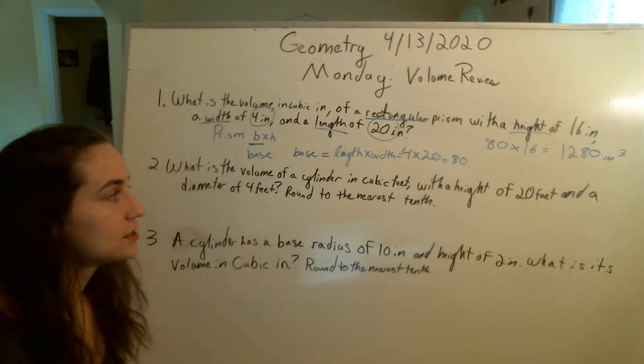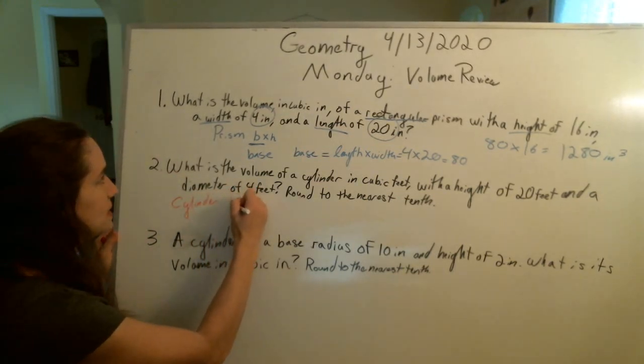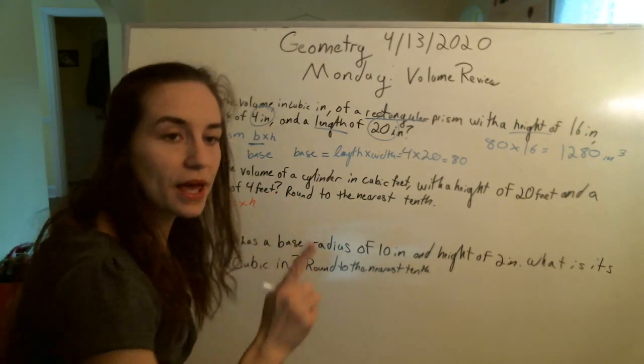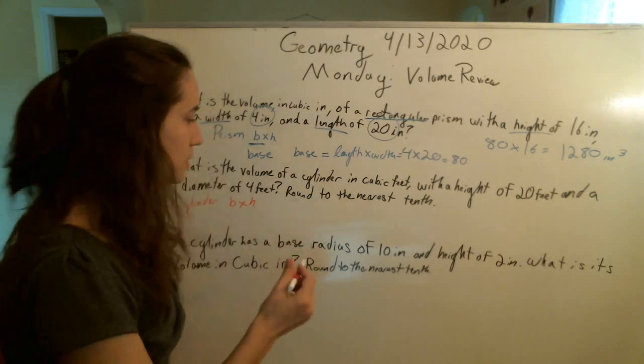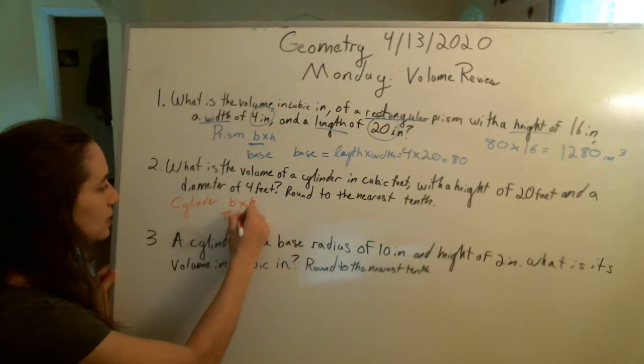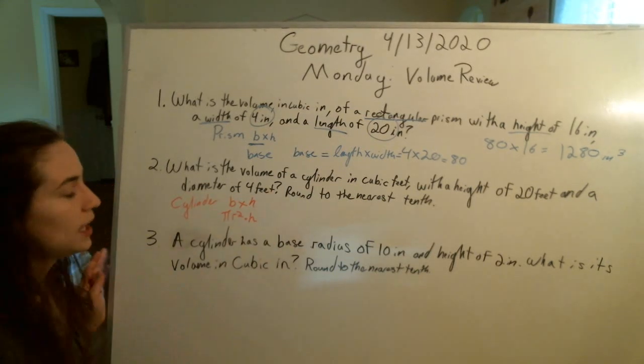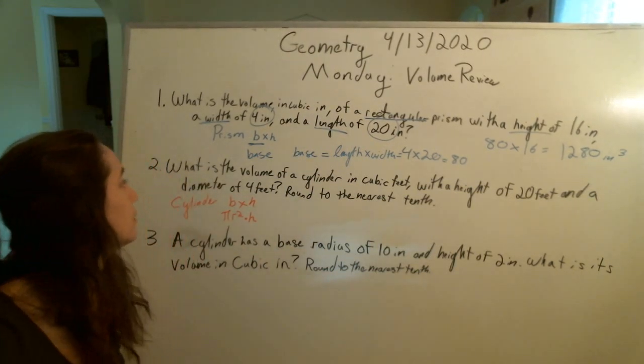Moving on to cylinders, the formula is the same. It is base times height, but the base of a cylinder is a circle. So, we're going to have a circle base, which is pi r squared times height. Now, r squared is important, it is the radius, I know you all know this.